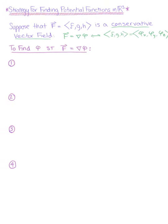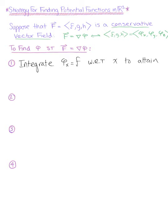So we now want to establish that strategy. To find the potential function phi such that the vector field is conservative, the first thing we want to do is integrate. We're going to pick one of the partial derivatives — here I'll start with the partial derivative of phi with respect to x, which we know is equal to f — and integrate with respect to x to obtain phi.